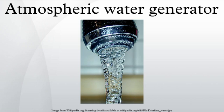Atmospheric water generators become more effective as relative humidity and air temperature increase. As a rule of thumb, cooling condensation atmospheric water generators do not work efficiently when the temperature falls below 18.3 degrees Celsius or the relative humidity drops below 30%. This means they are relatively inefficient when located inside air-conditioned offices. The cost-effectiveness of an AWG depends on the capacity of the machine, local humidity and temperature conditions, and the cost to power the unit.